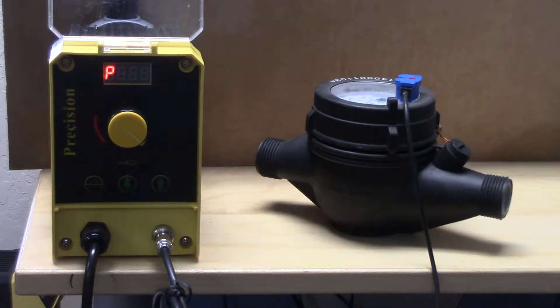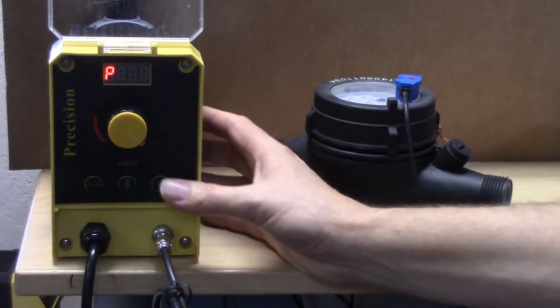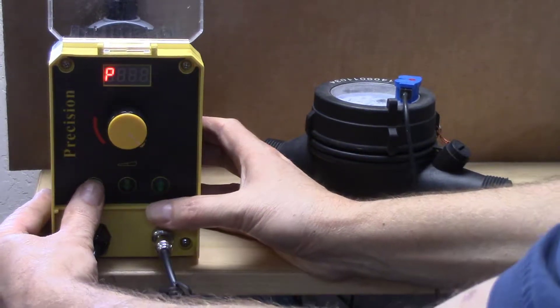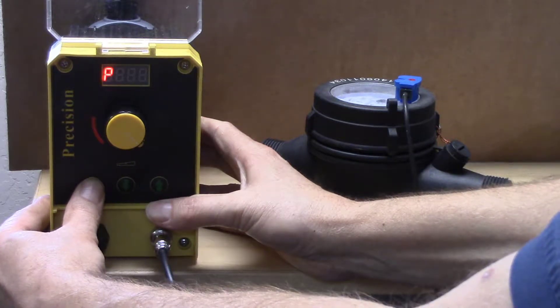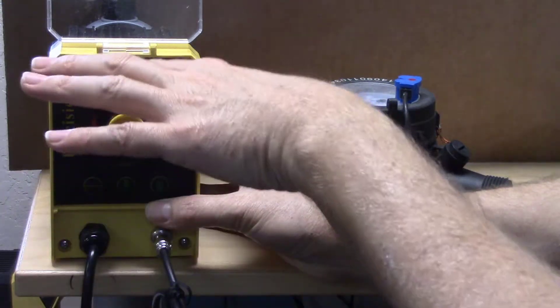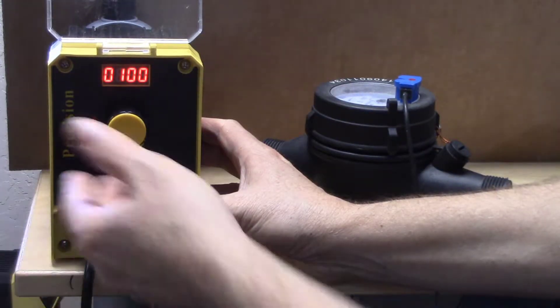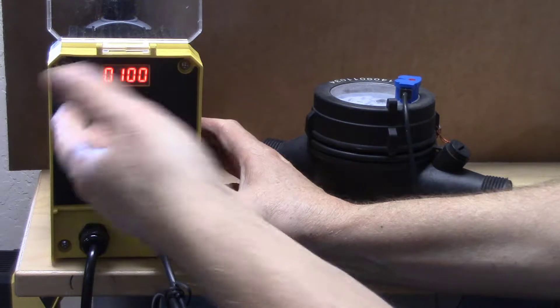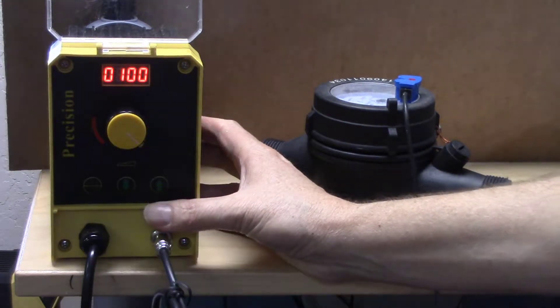You don't know what mode the pump is programmed into until you go into the programming parameters. To do that, you press and hold the button to enter programming. Once you do, it goes back to P fairly quickly if you don't press one of the buttons, so while I'm talking you'll see it go back to P several times.